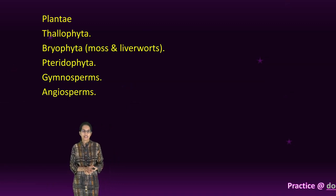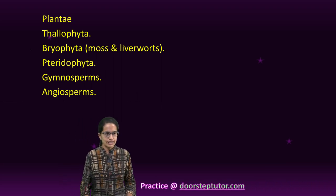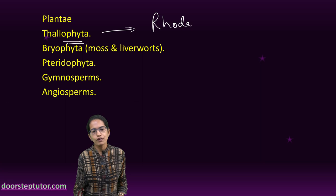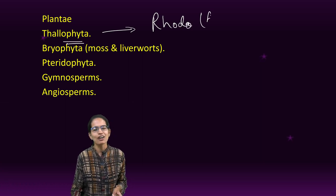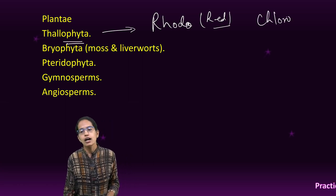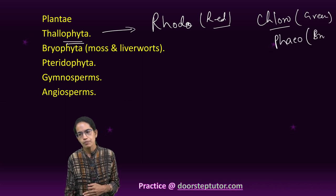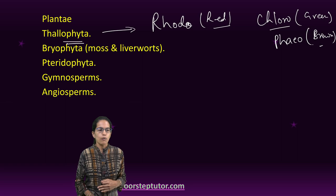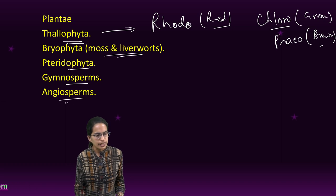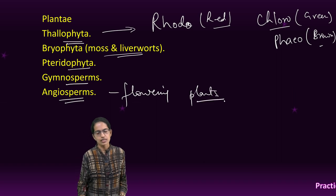Under plant classification, the first category is Thallophyta, which includes three divisions: Rhodophyta (red algae), Chlorophyta (green algae), and Phaeophyta (brown algae). Bryophyta includes mosses and liverworts. Then we have Pteridophyta, Gymnosperms, and Angiosperms — the flowering plants.